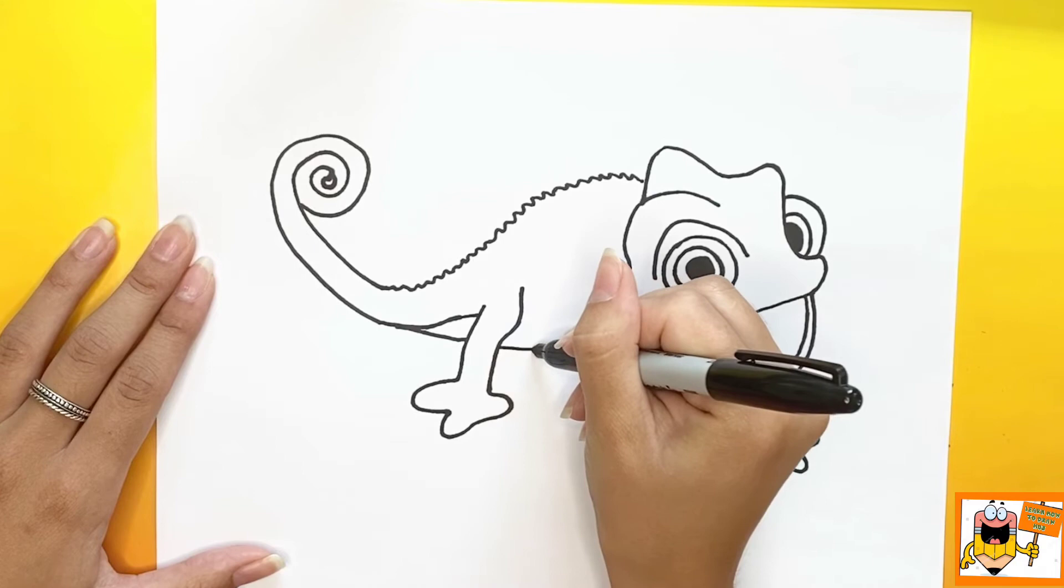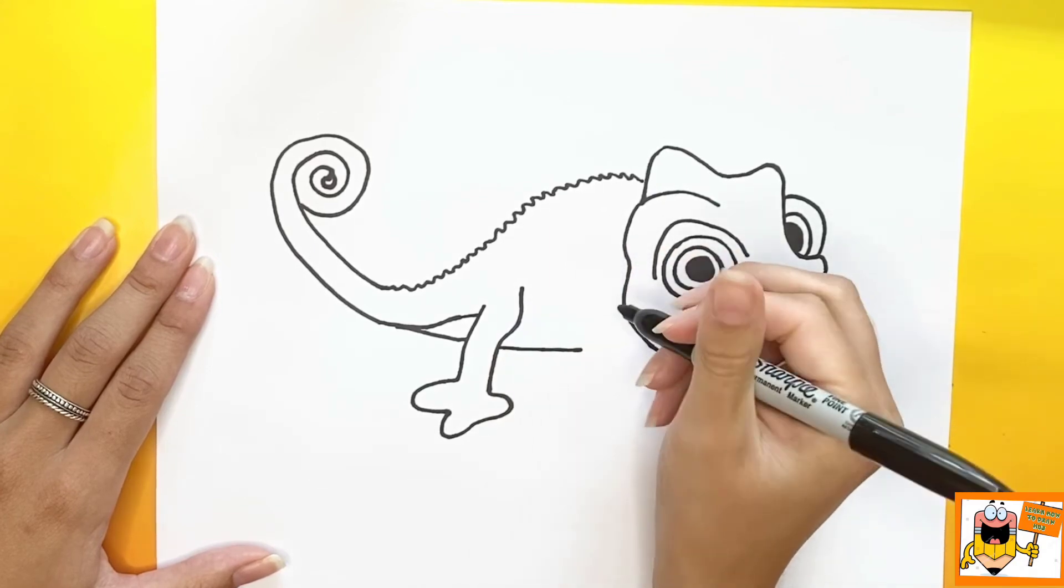Once we're done making that foot, we're going to draw a straight line across a little bit, and then we're going to make another foot.